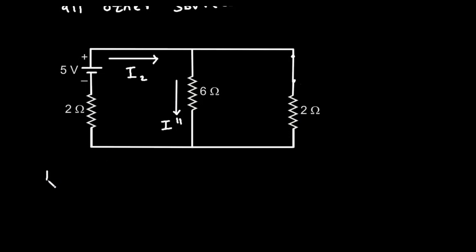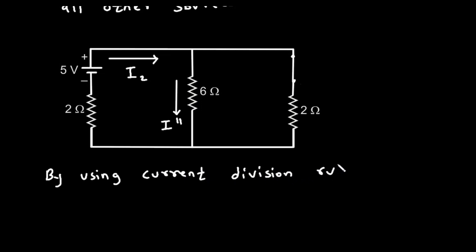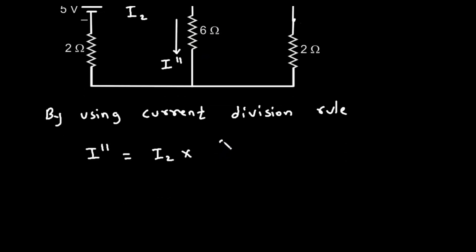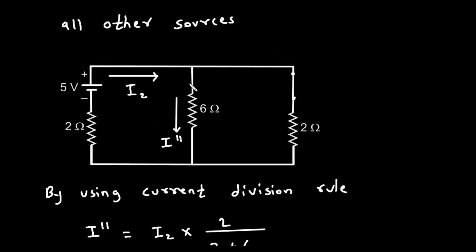Here we will apply the current division rule. By using current division rule, I double prime will be equal to I2 multiplied with the opposite branch resistance. Again, the opposite or parallel branch to this 6 ohm is the 2 ohm resistor. So it will be I2 multiplied by 2 ohm divided by (2 + 6). We don't know the value of I2 yet.